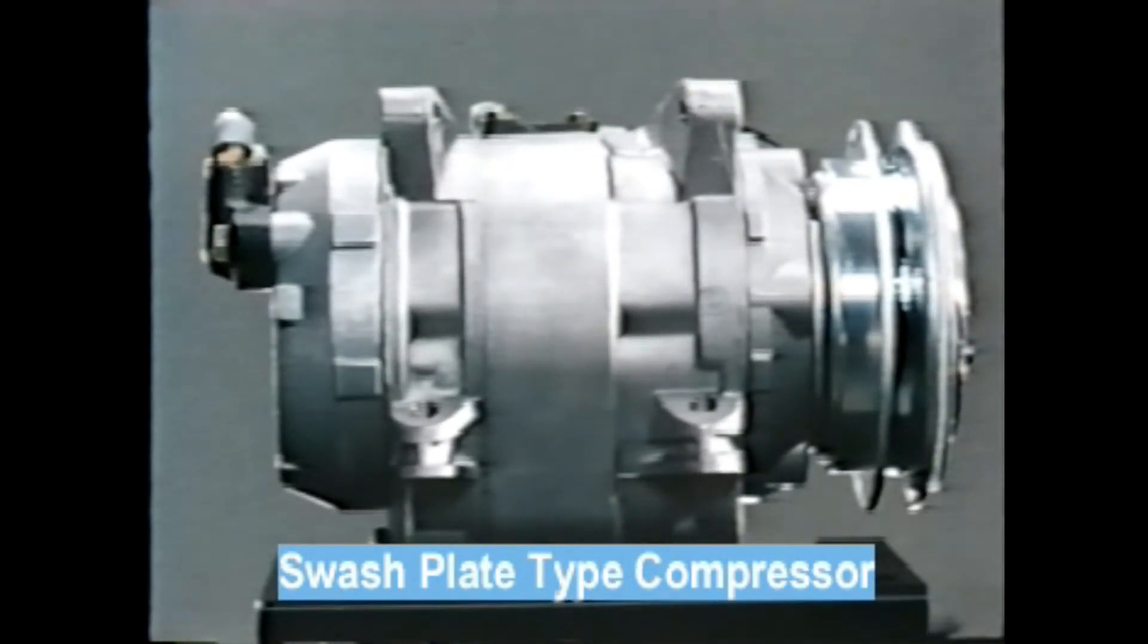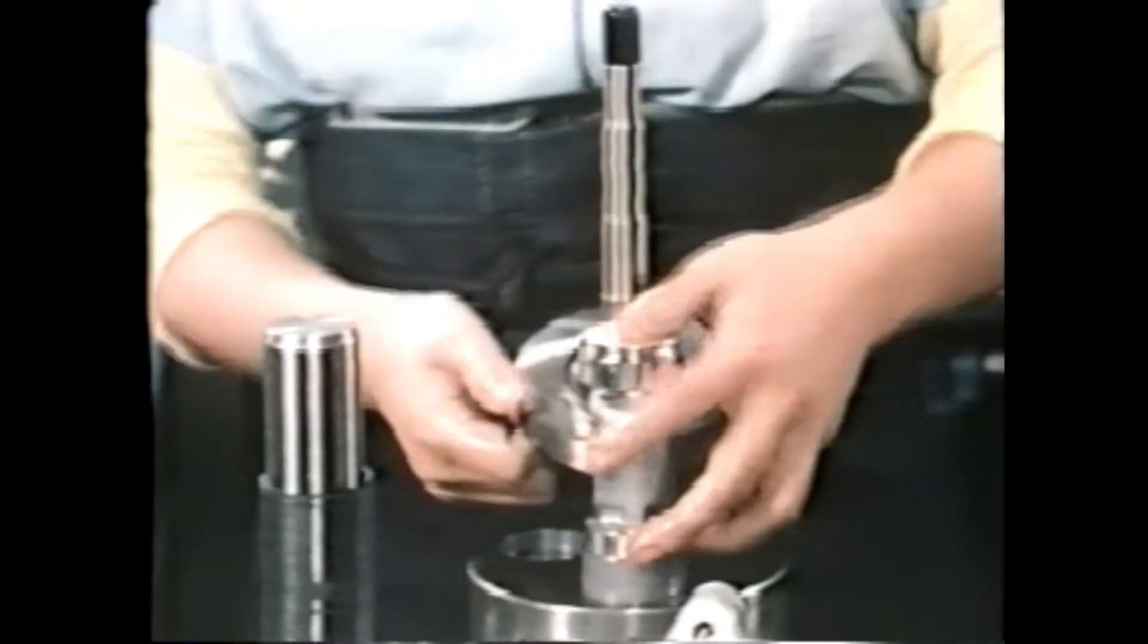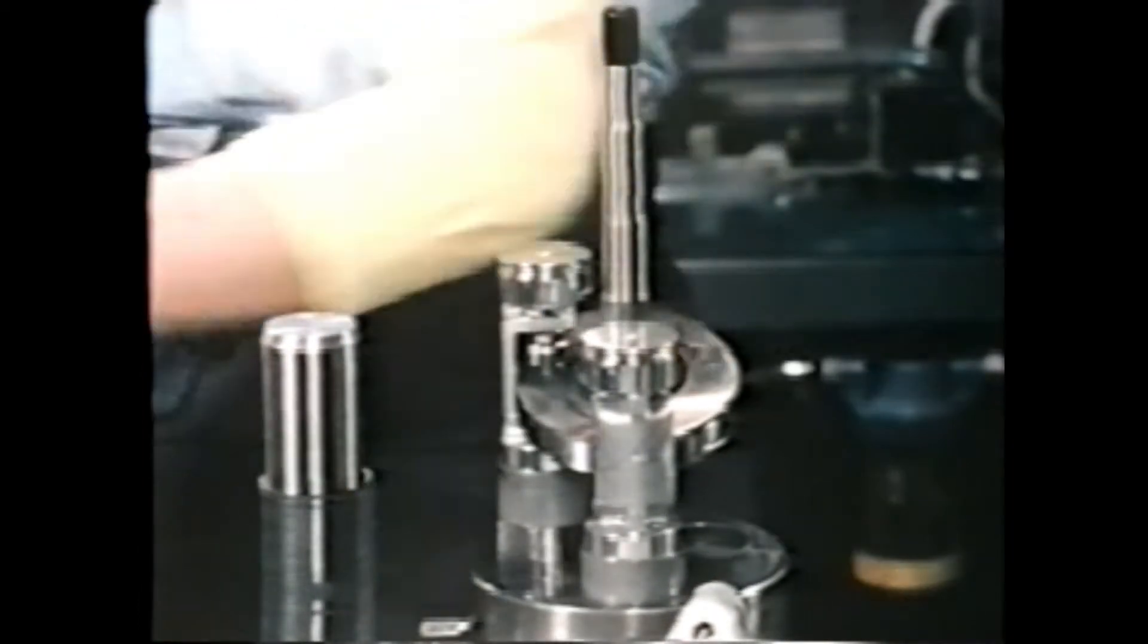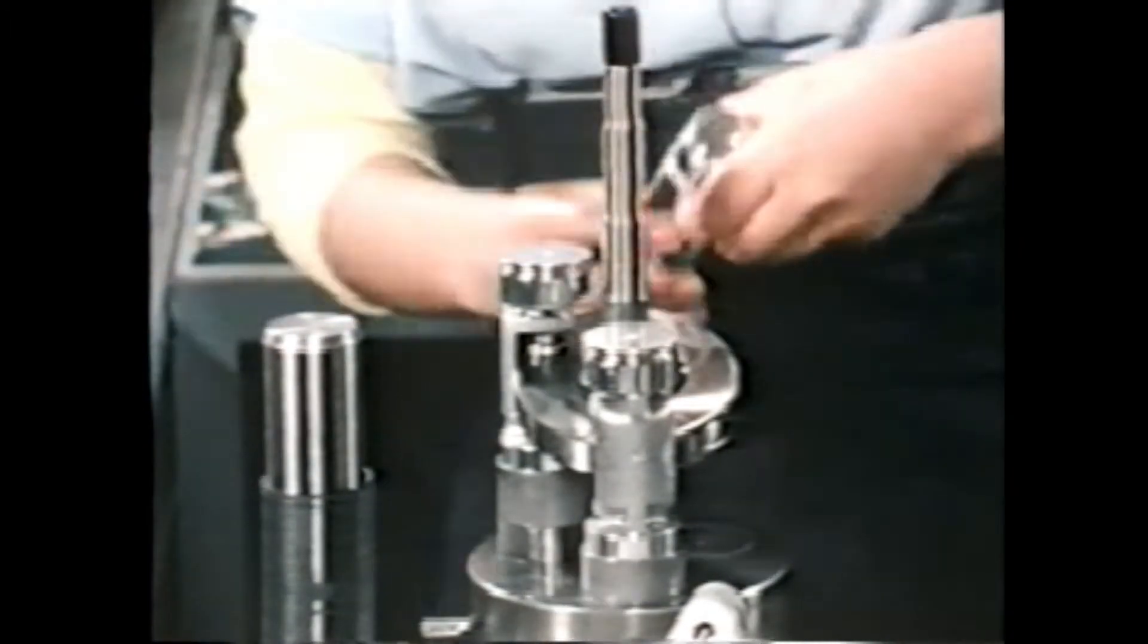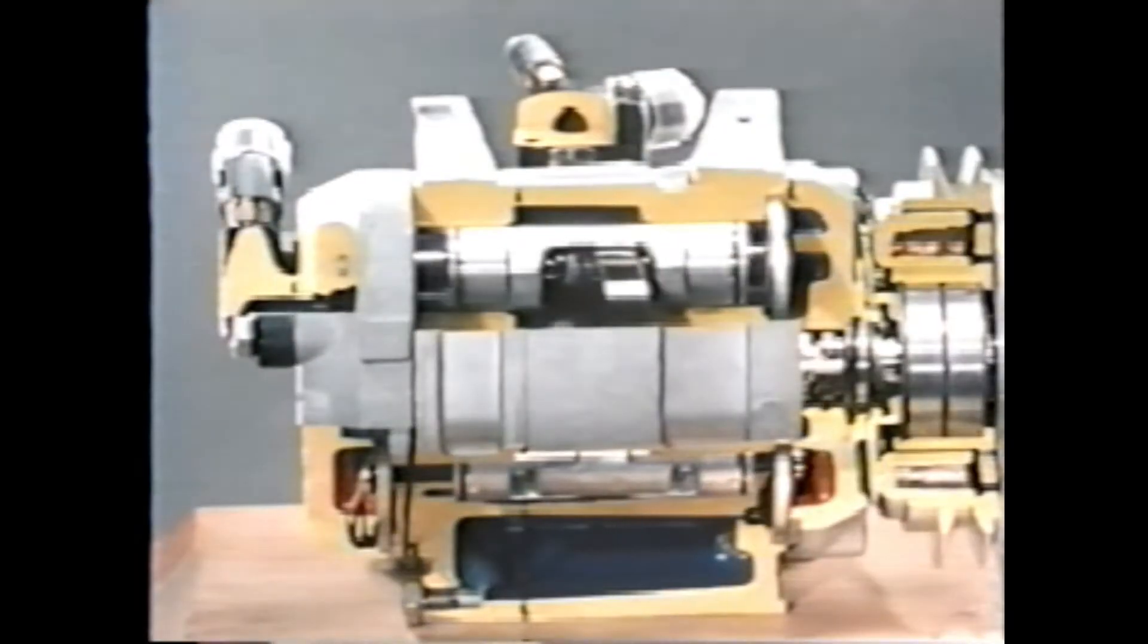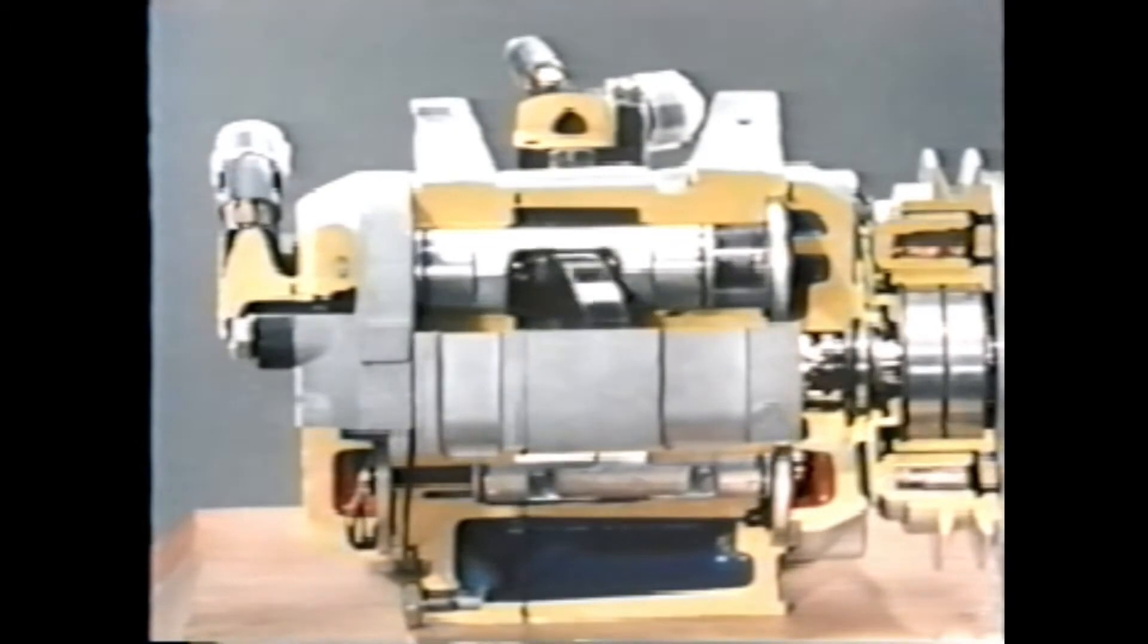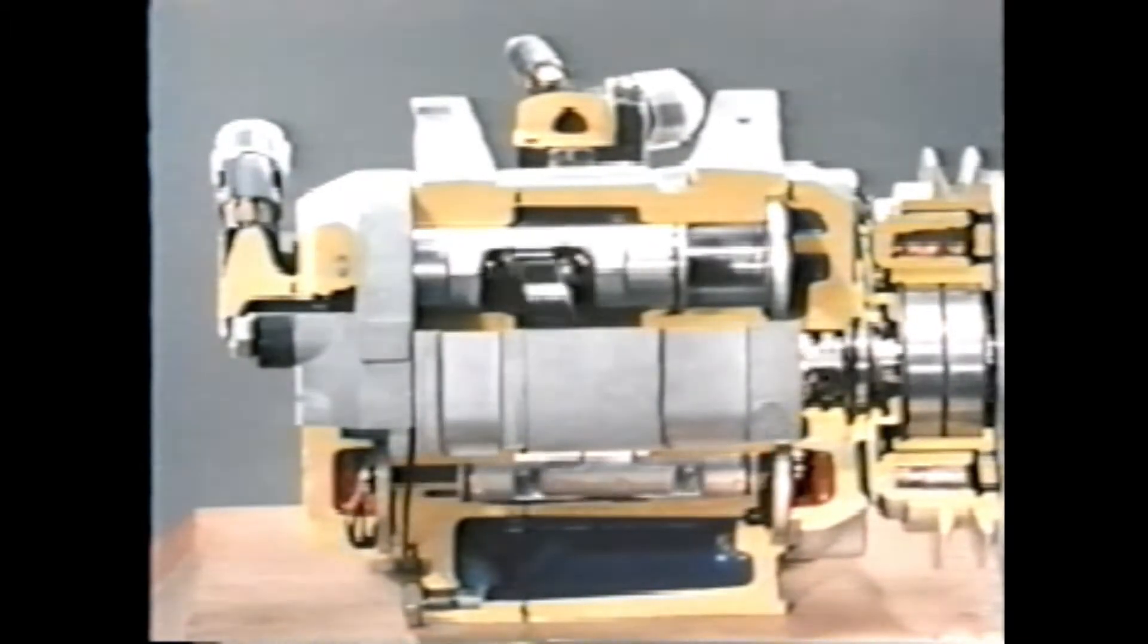The swash plate type compressor rotates an inclined plate on the shaft to cause piston movement. Its advantages include easy mounting made by its cylindrical form, well-balanced design for minimal vibration and noise.